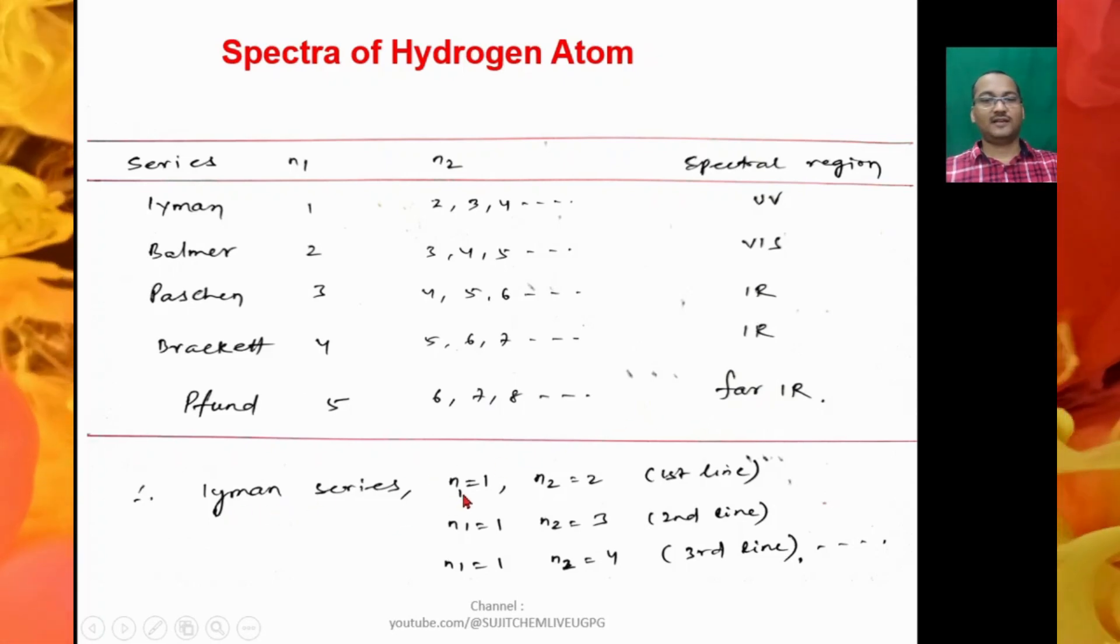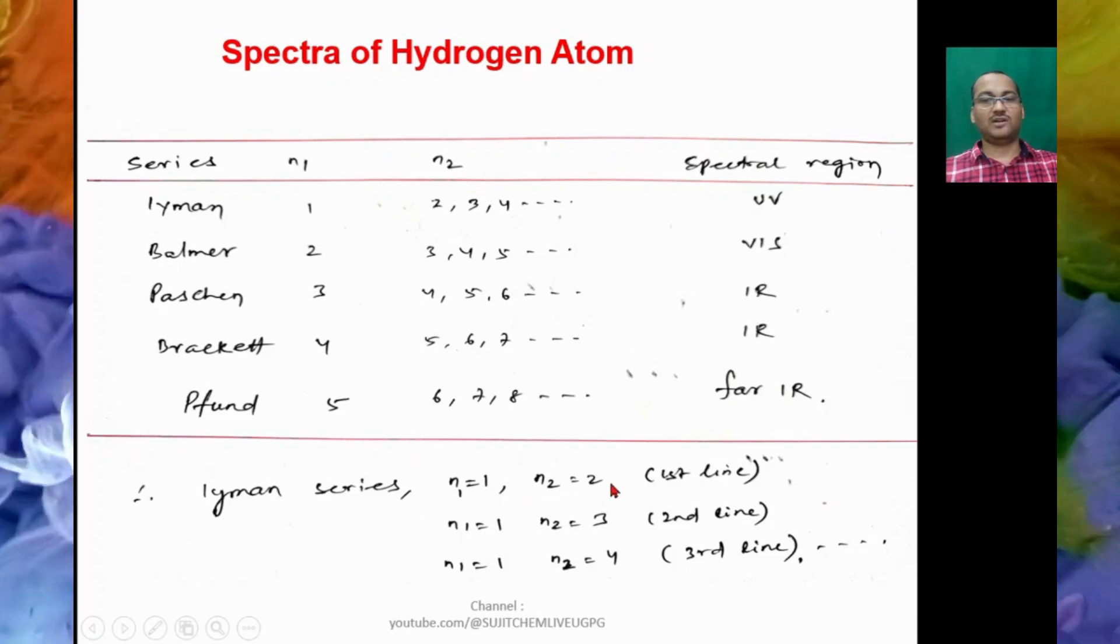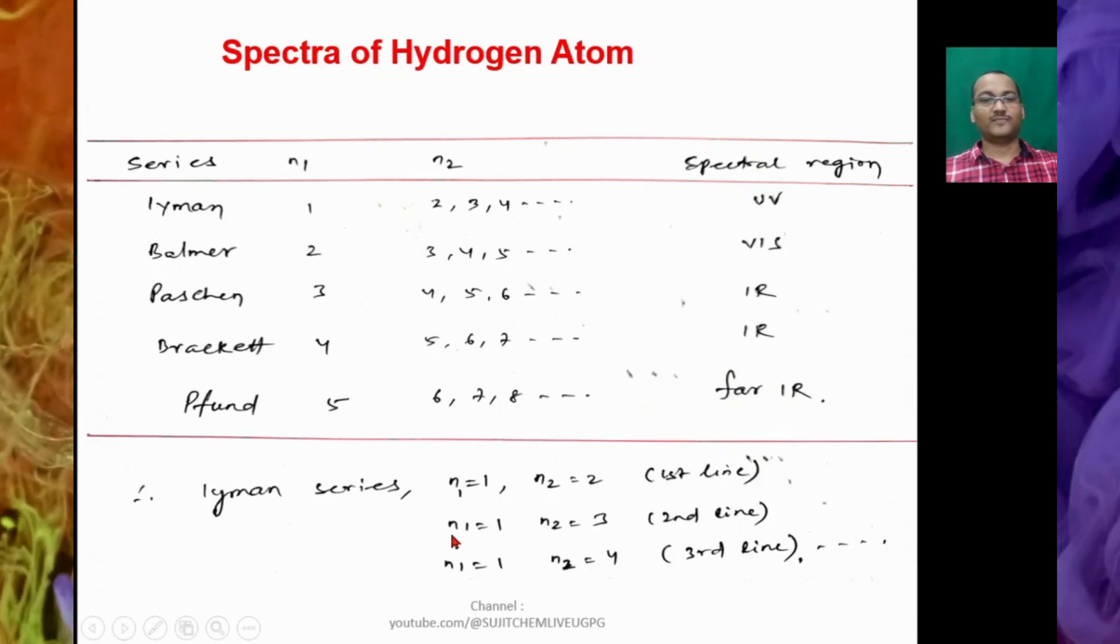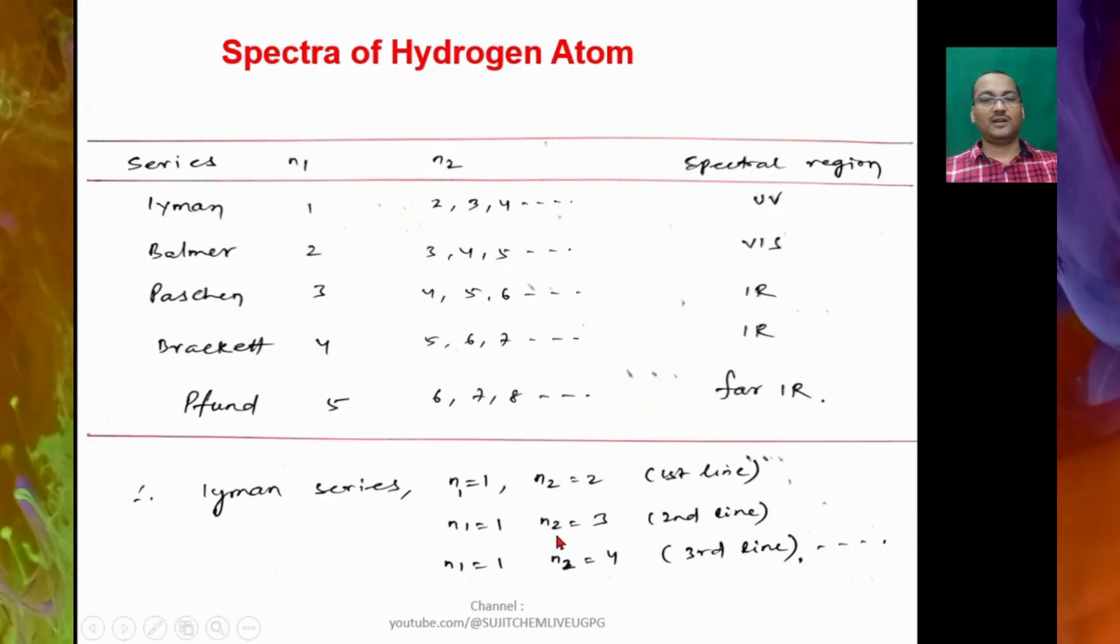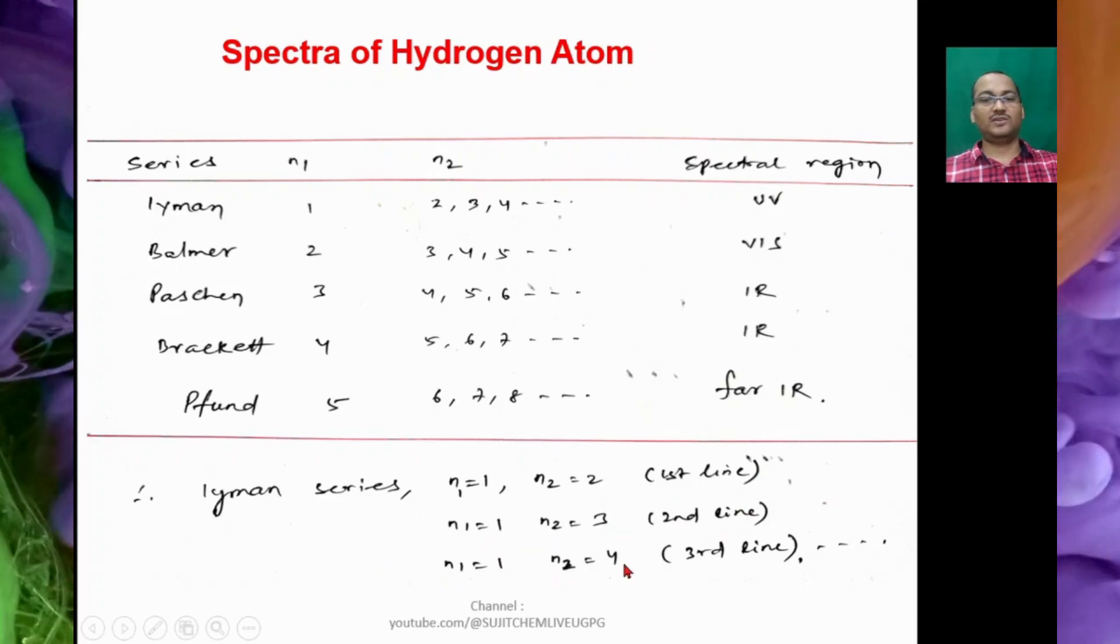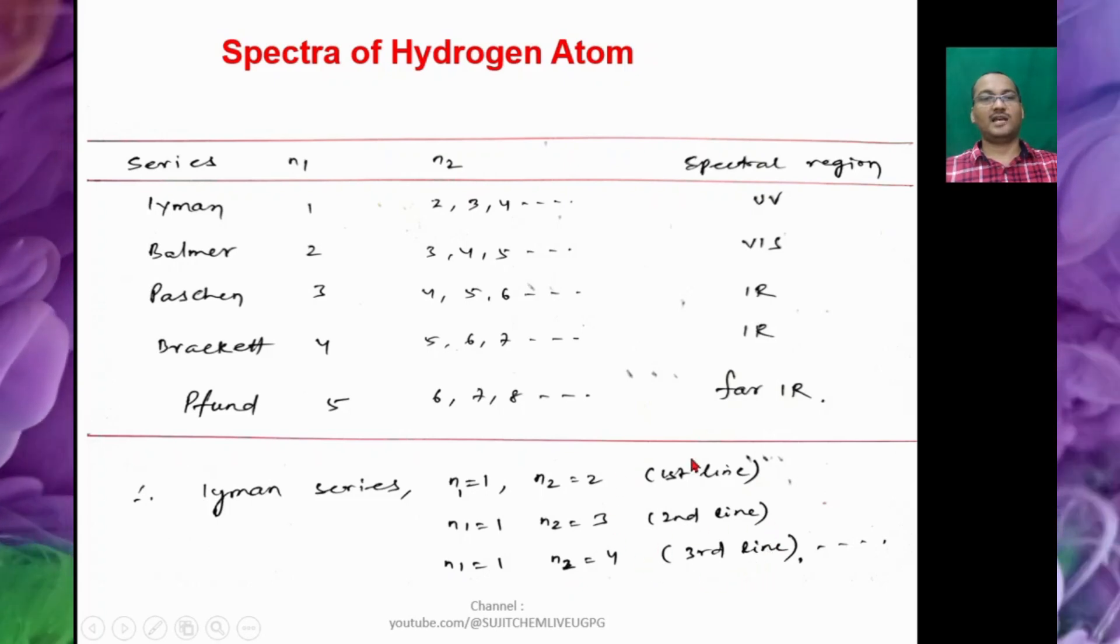So for Lyman series, N₁ = 1 and N₂ = 2, that is the first line. N₁ = 1, N₂ = 3, that is the second line. Similarly N₁ = 1, N₂ = 4, that is the third line for Lyman series.